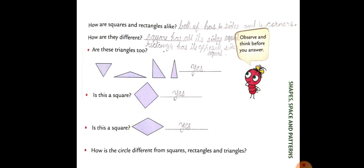How is the circle different from square, rectangle, and triangle? Because square and rectangle have four corners and four sides, and triangle has three corners and three sides. But circle has zero corners and zero sides. That's why circle is different from square, rectangle, and triangle.